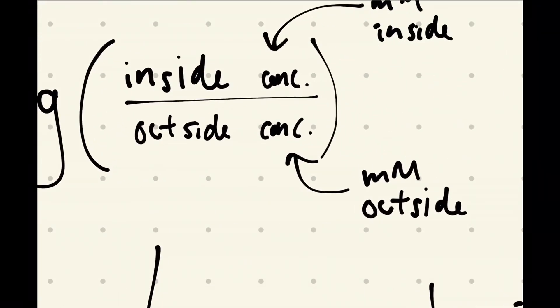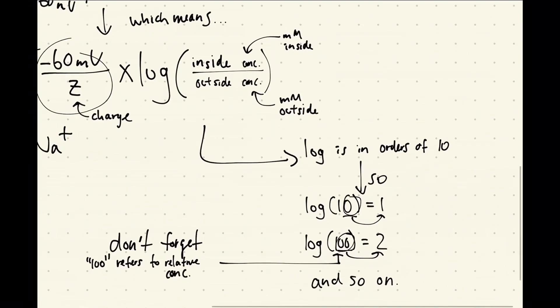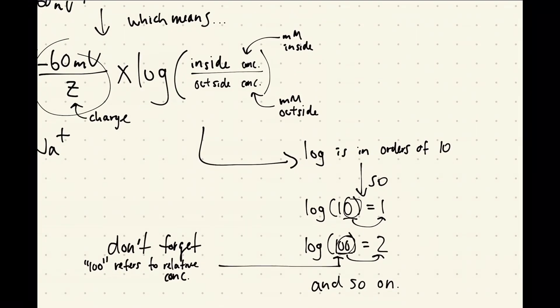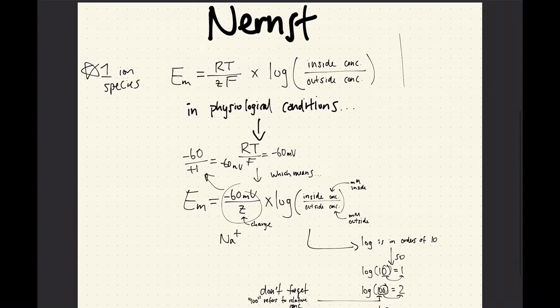And then don't forget what this means is that the 100 refers to the relative concentration. So if we're looking right here, that means the relative concentration inside is going to be 100 times greater than the relative concentration on the outside. So I hope that explains the Nernst equation for you.